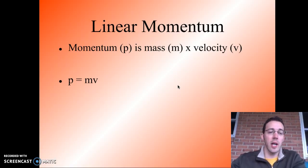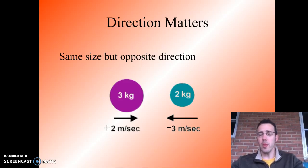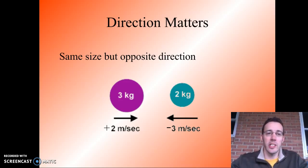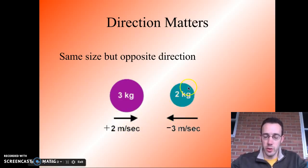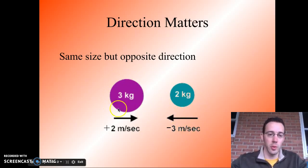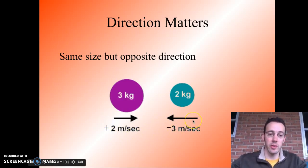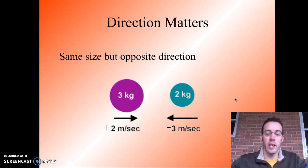For momentum, direction is very, very important. Consider two objects: one is 3 kilograms moving at 2 meters per second, giving a momentum of 6 kilogram meters per second, and the other is 2 kilograms times 3 meters per second, which is also 6 kilogram meters per second. But one is moving to the right, so we say it's positive, and the other is moving to the left, so we say it's negative. You need to make sure you know the sign before you start any problem.